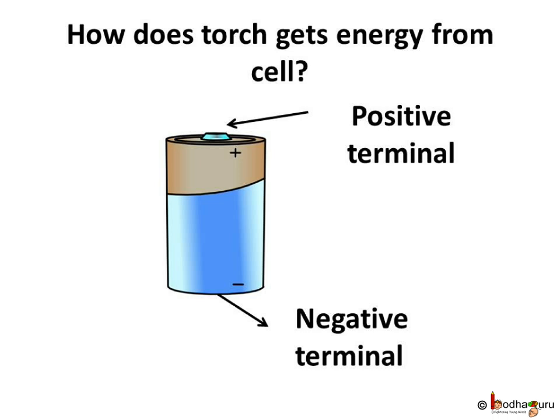Why is it so? If you observe the cell closely, there is a small metal cap on one side and a metal disc on the other side. The metal disc is the negative terminal and the metal cap is the positive terminal. To recognize the positive and negative terminals of the cell easily, one side is marked plus and the other side is marked minus. All electric cells have two terminals — a positive terminal and a negative terminal.